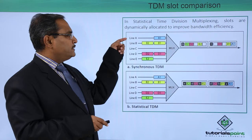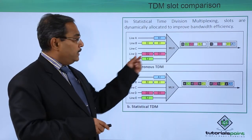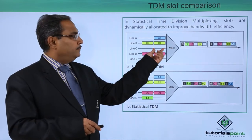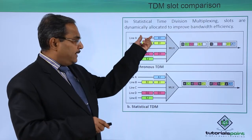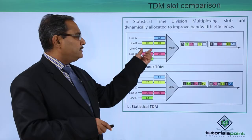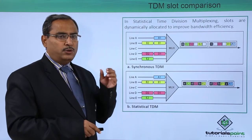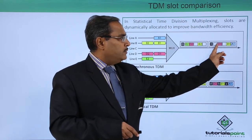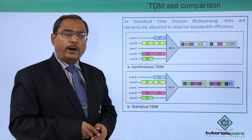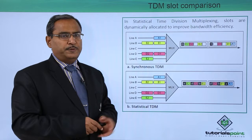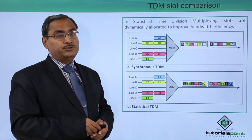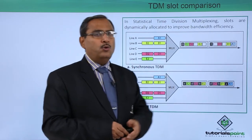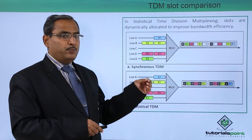What is the problem? We are having lines A, B, C, D, and E. Consider in the first slot, channel C and channel E are not transmitting any data. In the second time slot, line A and line C are not transmitting any data. If we allocate the respective slots for the frame, you can find that there are some empty slots. Why empty slots? Because if you do not transmit, the slots will still get allocated — that is a misuse of our resource. We are allocating a time slot, but during that time slot no data is getting transferred.